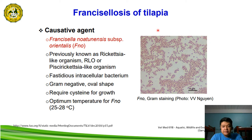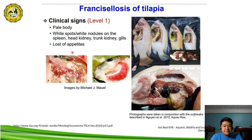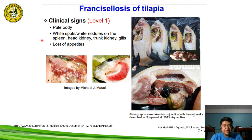Since this is a fastidious type of bacteria, it requires cystine for its growth, and the optimum temperature for growth is 25 to 28 degrees centigrade. This diagram illustrates the gram staining of Francisella noatonensis orientalis. For the clinical signs of francisellosis in tilapia, these include pale body and the presence of white spots or white nodules on different tissues such as the spleen, head kidney, trunk kidney, and gills, as well as loss of appetite.